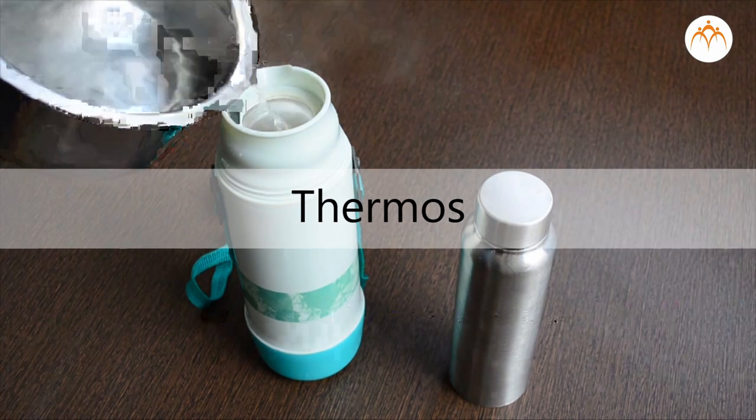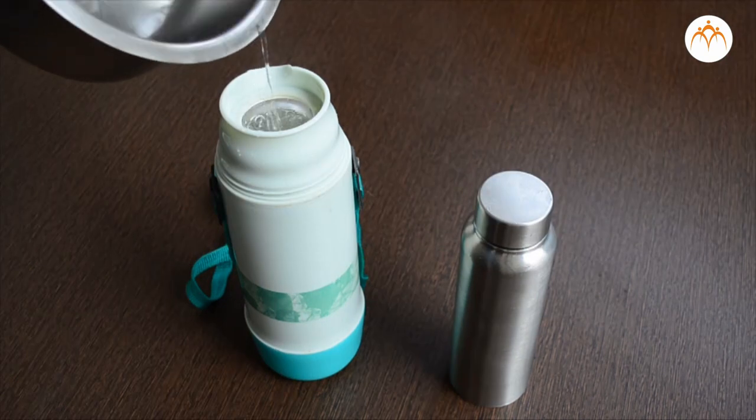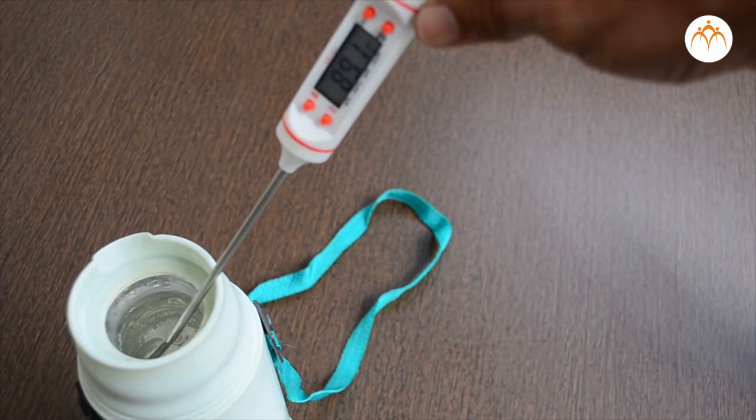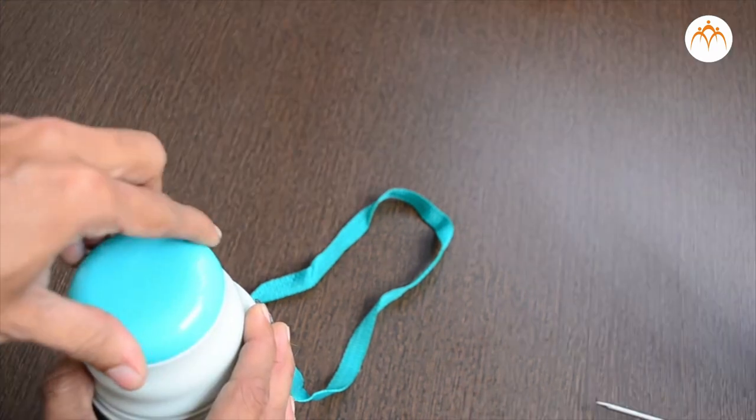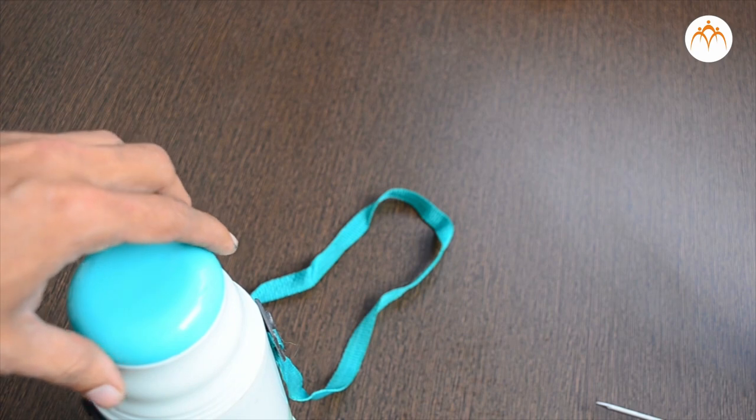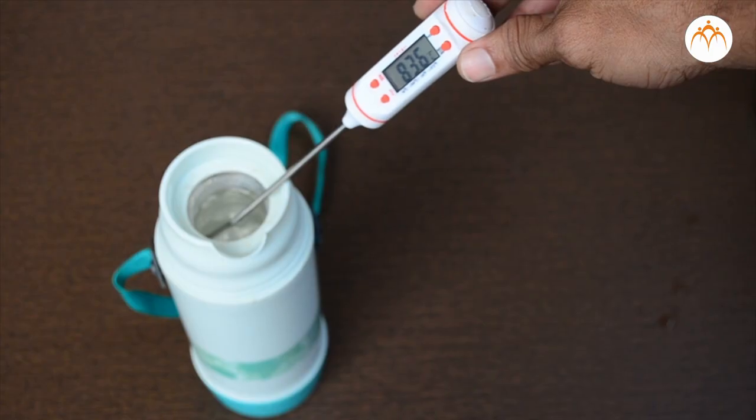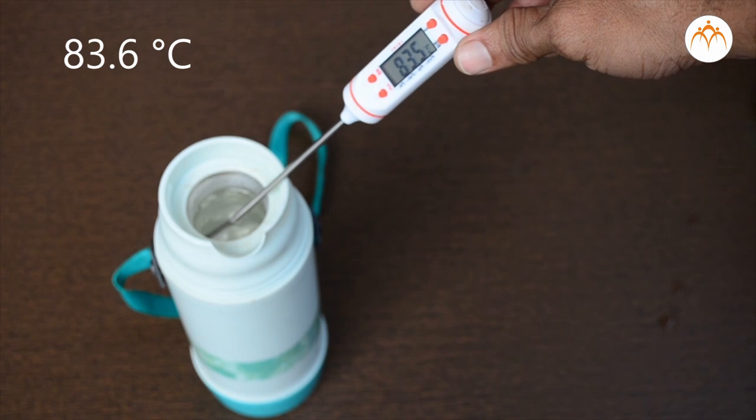Thermos. Let us pour hot water in the thermos. Its initial temperature is 89.1 degrees Celsius. I will close the lid and keep it aside for one hour. Temperature of water after one hour is 83.6 degrees Celsius.